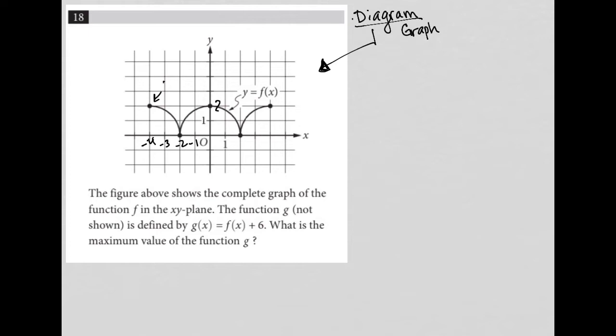So that point there is the point negative 4, 2. And we see that this point here is negative 2, 0, and we have 0, 2 for that y-intercept there, and then 2, 0 here.